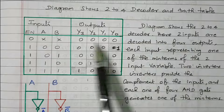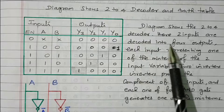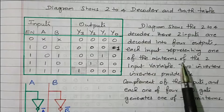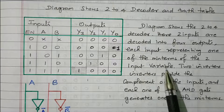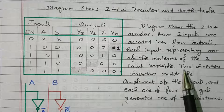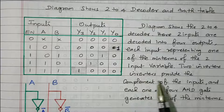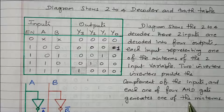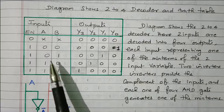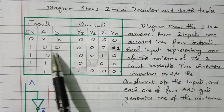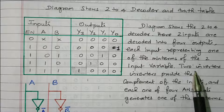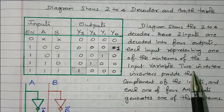There are 2 inputs, A and B, and 4 outputs. Each output represents one of the min terms of the 2-input variable. The 2 inverters provide the complement of the inputs, and each of the 4 AND gates generates one of the min terms. So we need A and B as well as A-bar and B-bar, and we use 2 inverters to get A-bar and B-bar.